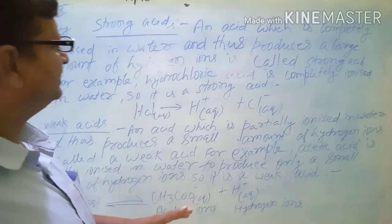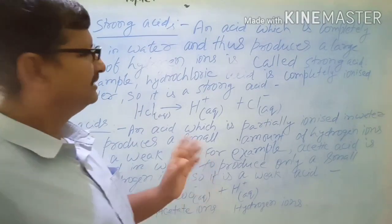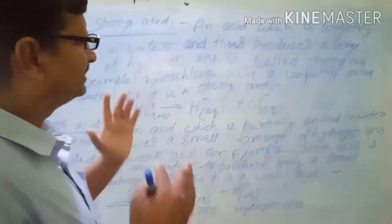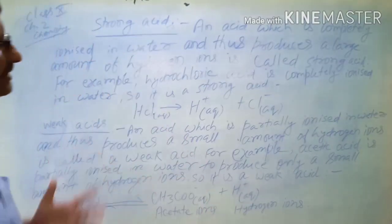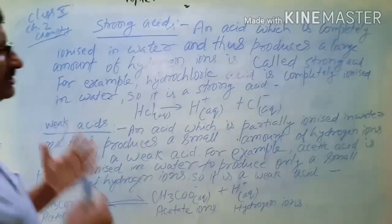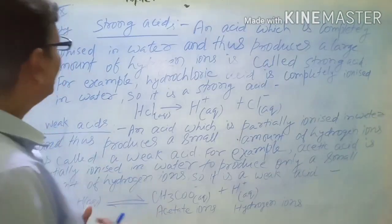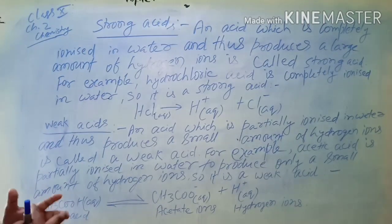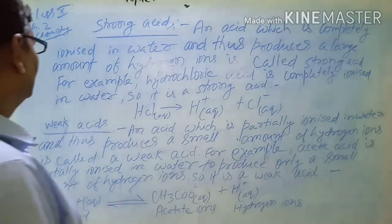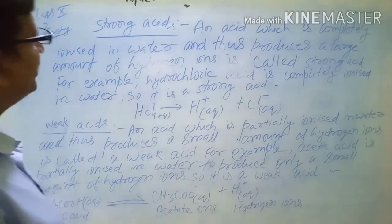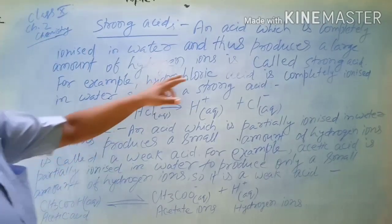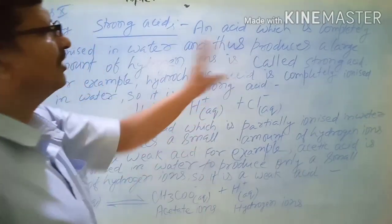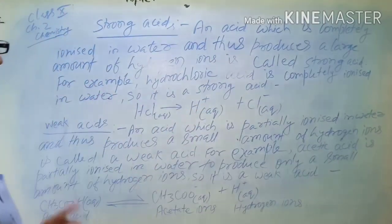A strong acid is an acid which is completely ionized in water and thus produces a large amount of hydrogen ions. It is called a strong acid.